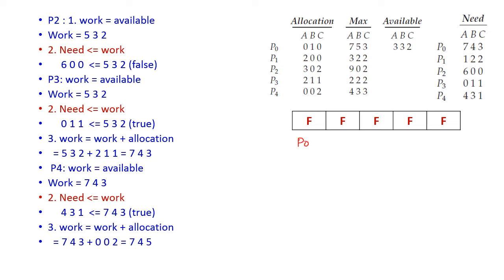P0 is not yet finished. P1 is now finished and set to true. Let us try P2. Current Work is [5, 3, 2]. Need for P2 is [6, 0, 0]. Since type A requirement is 6 but available is only 5, we cannot allocate the required resources to P2. This is false — P2 is waiting for its resources.